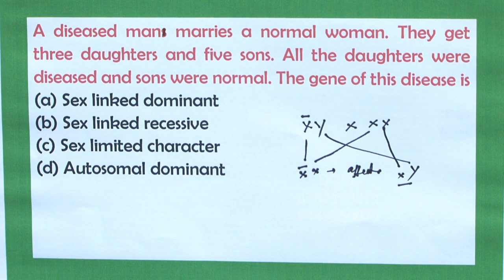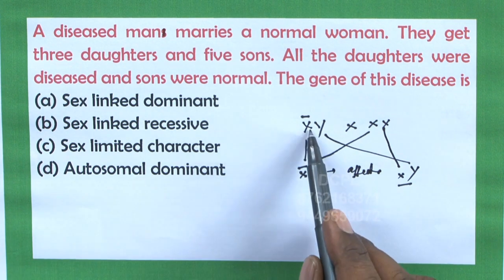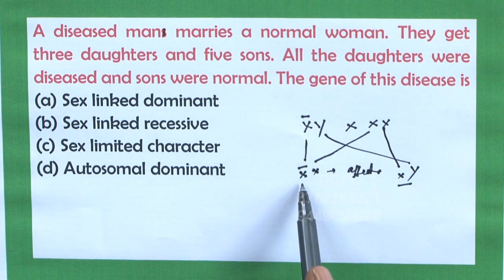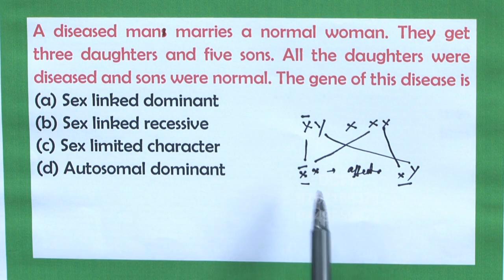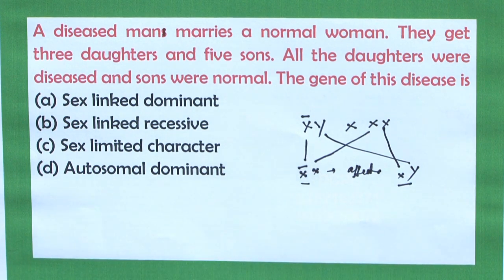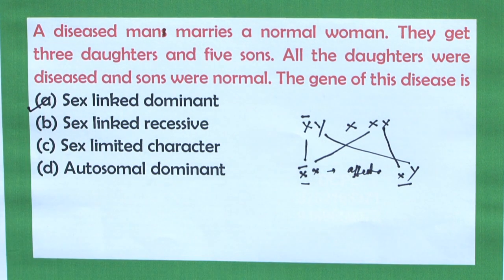When you consider all the options and look at the cross, if there is a dominant gene present on the X chromosome in the father, it is being inherited to the daughter, and the daughter will be affected because the gene on the X chromosome is dominant. Hence the correct option is option A, sex-linked dominant.